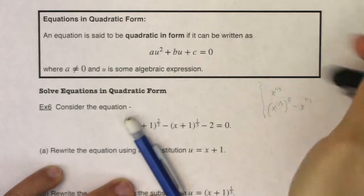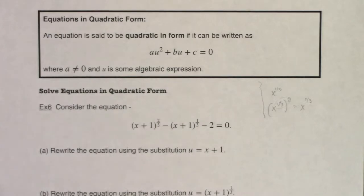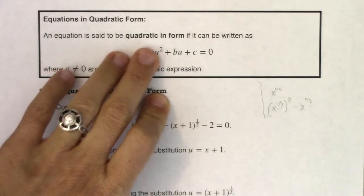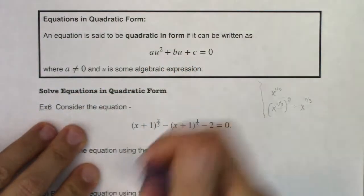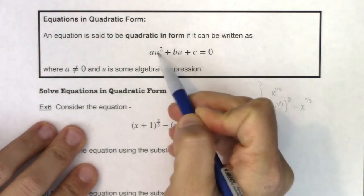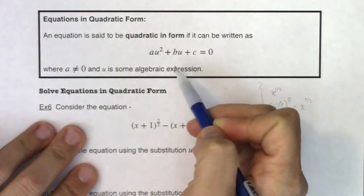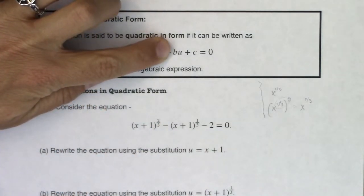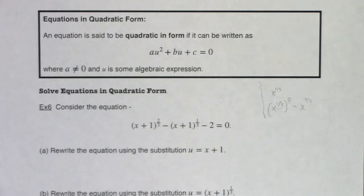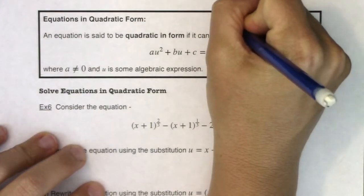An equation is said to be in quadratic form if it can be written as au squared plus bu plus c. The thing we're changing out here is we don't have x's anymore — u is going to be some algebraic expression. They note that a cannot equal zero because if a was equal to zero, you'd have a linear equation, not a quadratic equation. You're going to hear me refer to this idea as u substitution.